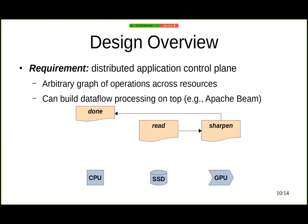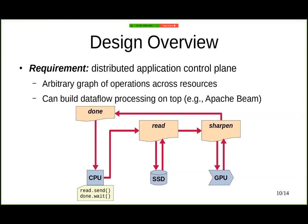Now let's zoom in and see how the CPU, after constructing this operation graph, goes about executing this graph in Caladan. The CPU code invokes the send operation on the read request of the graph and then waits for the done operation to complete. This is sent to Caladan, which triggers the read operation. The read operation is then sent to the physical device — the SSD. Once Caladan sees that the SSD request is done, it fetches the next operation in the graph until the entire graph has finished execution.